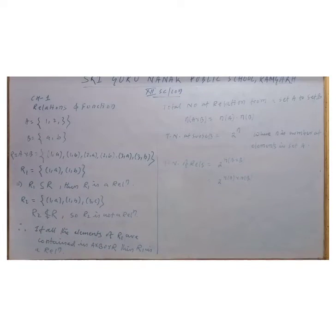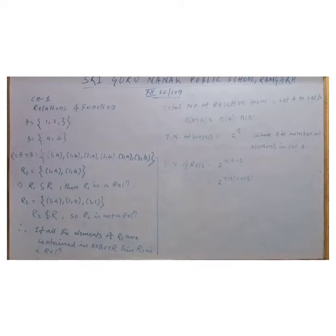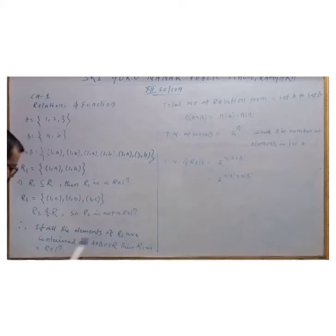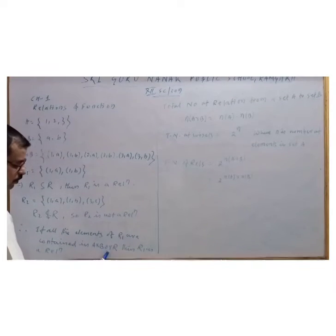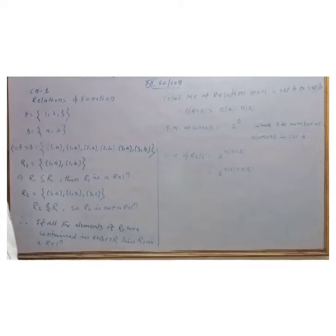Since it is not a subset, it is not a relation. Therefore we come to a conclusion that if all the elements of R1 are contained in A cross B or R, then R1 is a relation. This is very simple.